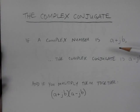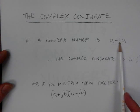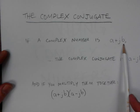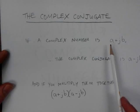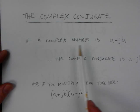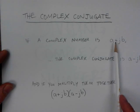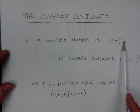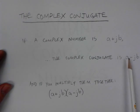A complex number — assuming you know what complex numbers are and that j is equal to the square root of negative 1. You might also be used to seeing this as b times i, where i is the square root of negative 1. It's the same thing, just different notation. So if a complex number is a real part and an imaginary part, a plus j times b, then the complex conjugate is simply a minus j times b.